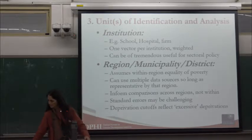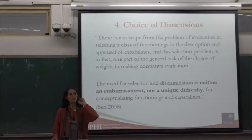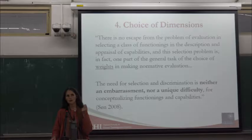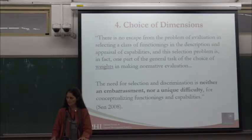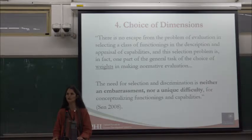Moving to the choice of dimensions: all choices from now on — dimensions, indicators, and weights — are interconnected. Although presented in a linear format, in practice you tend to make them together, going back and forth. Sen is clear that when you select capabilities for measurement you will leave some out, and that selection is not a cause for embarrassment — it is simply part of the measurement exercise, just as you can't include everything in a consumption list because the survey would get too long.